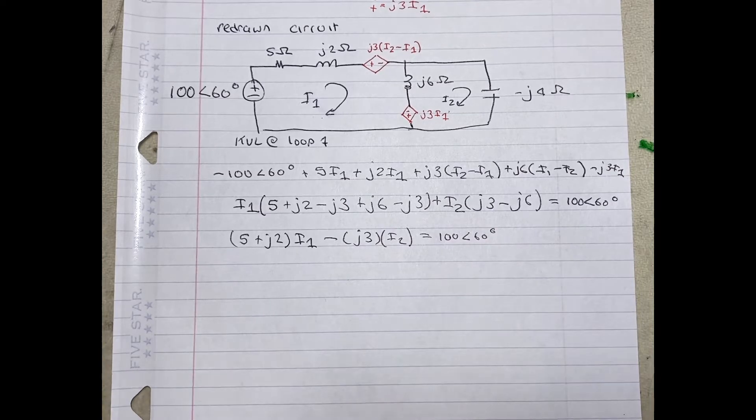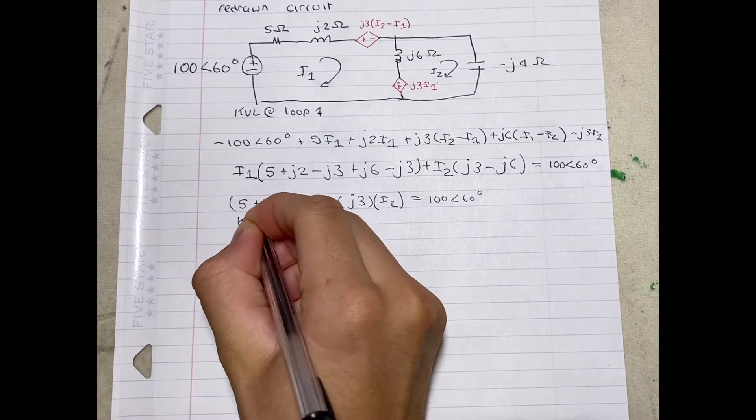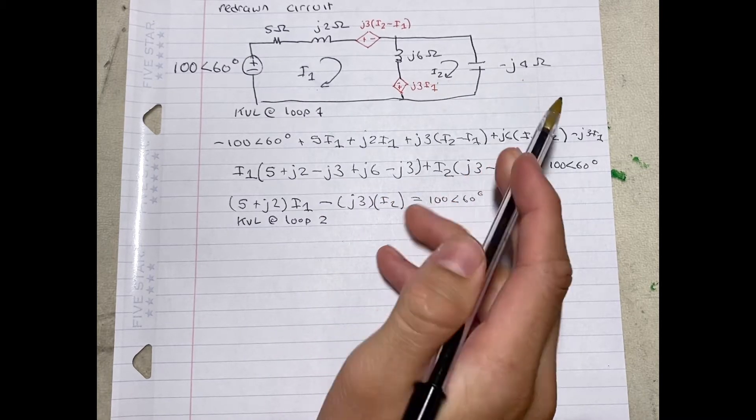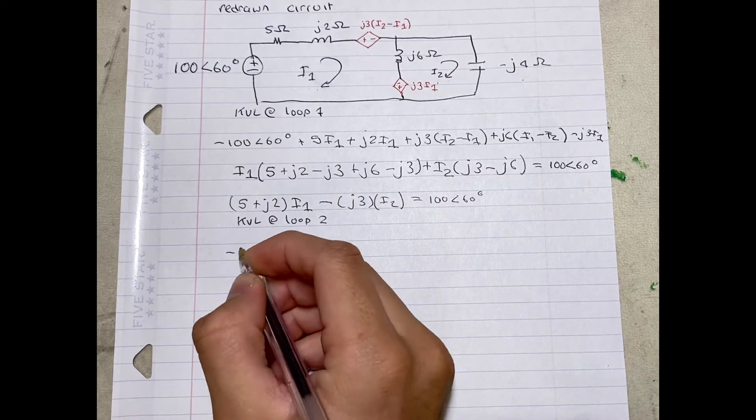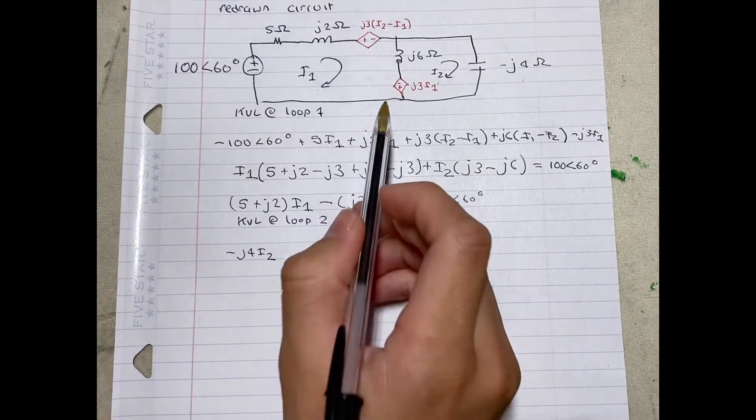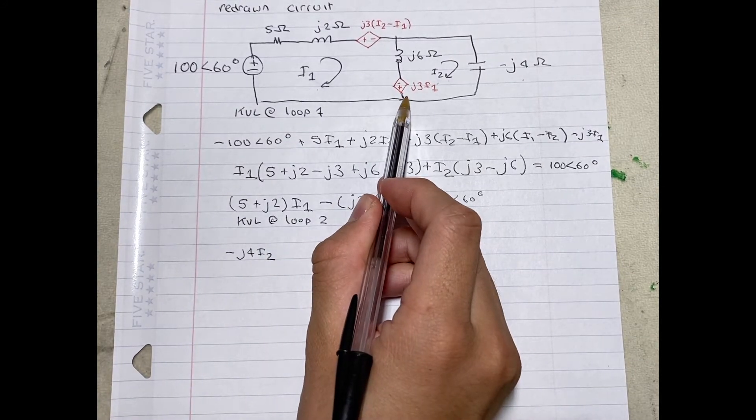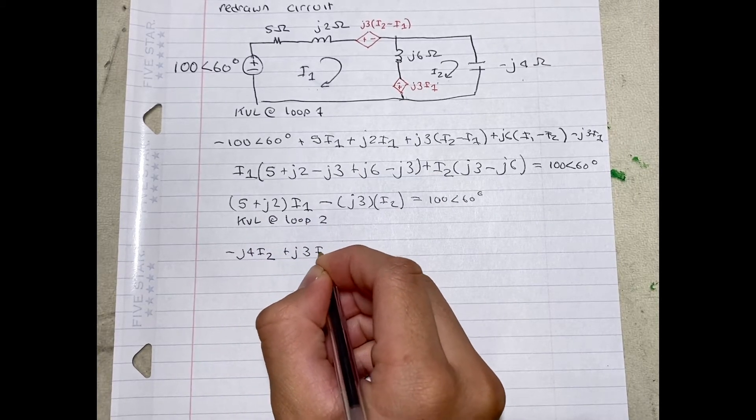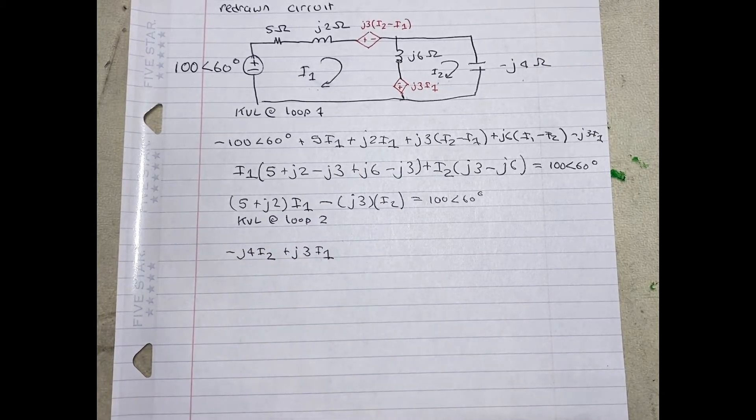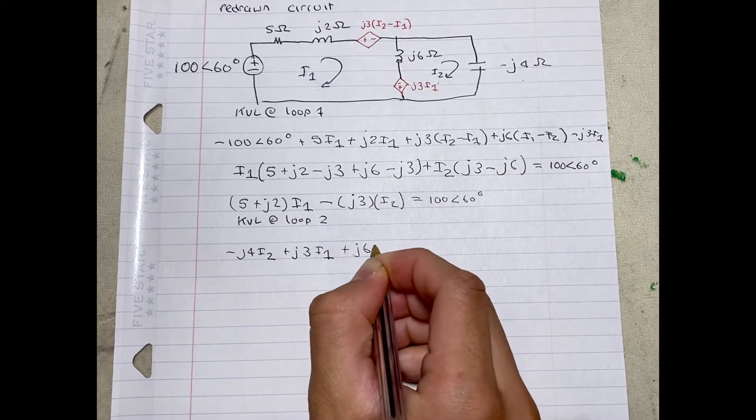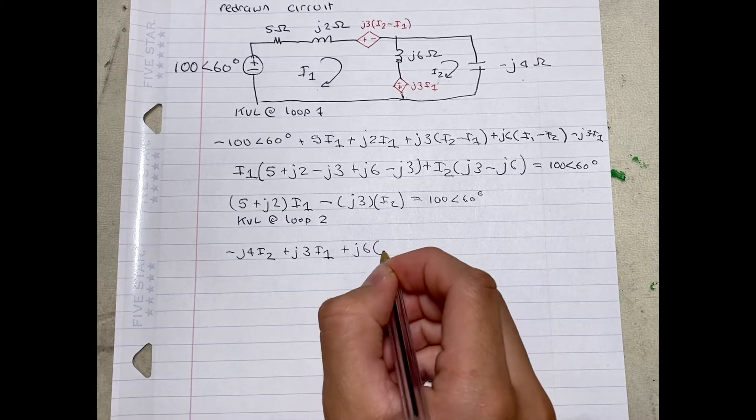Now we're going to need to perform a KVL at loop 2. So we're looking at the right side, and we're going to start at the capacitor. Negative J4 I2, plus J3 I1, plus J6 times I2 minus I1.